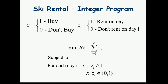The first step is formulating the ski problem as an LP. We have a variable X, which is an indicator for buying the skis, and for every day of skiing an indicator ZI for renting. We want to minimize BX — the cost of buying — plus sigma ZI. The constraint for each day is that it is covered either by buying or renting: X plus ZI is at least 1.